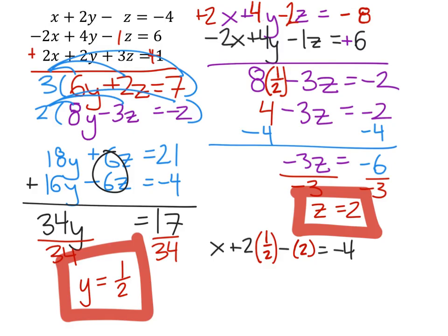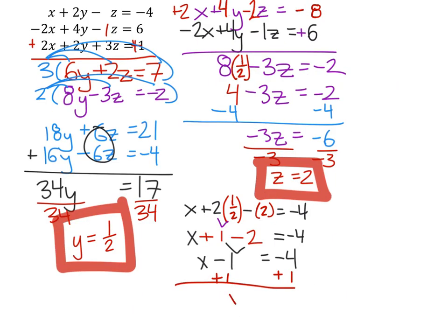We've replaced those, and we'll multiply these two. We have x plus 1 minus 2 equals negative 4, so we can combine these two. 1 minus 2 is negative 1, so we have x minus 1 equals negative 4. What minus 1 is negative 4? It's going to be negative 3. We'll just add 1 to both sides of the equation, and we find that x is actually a negative 3.